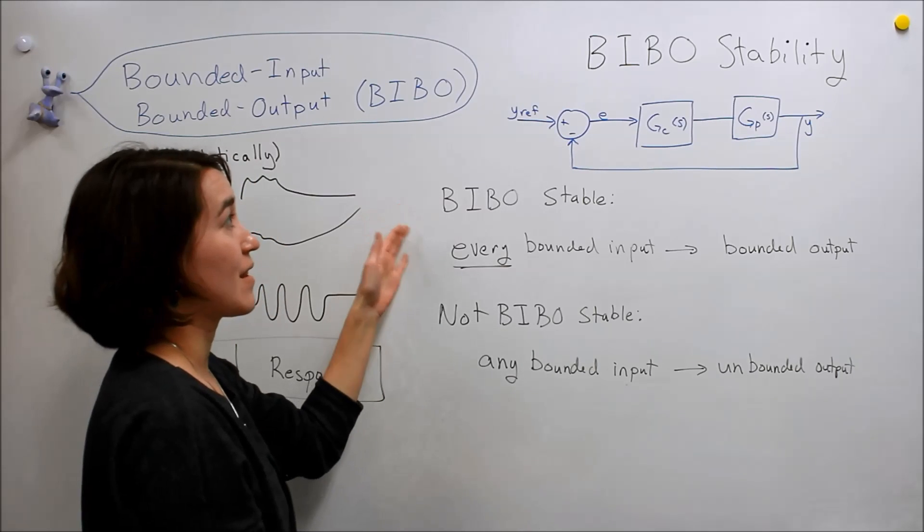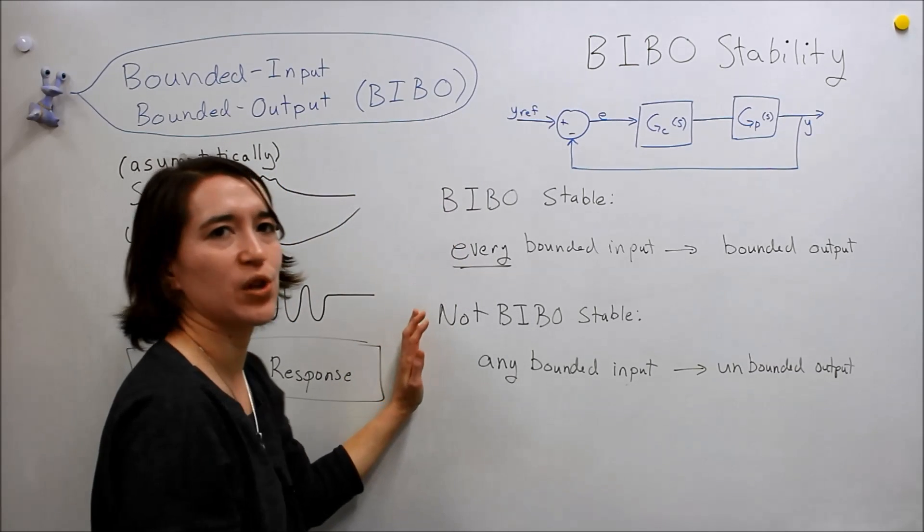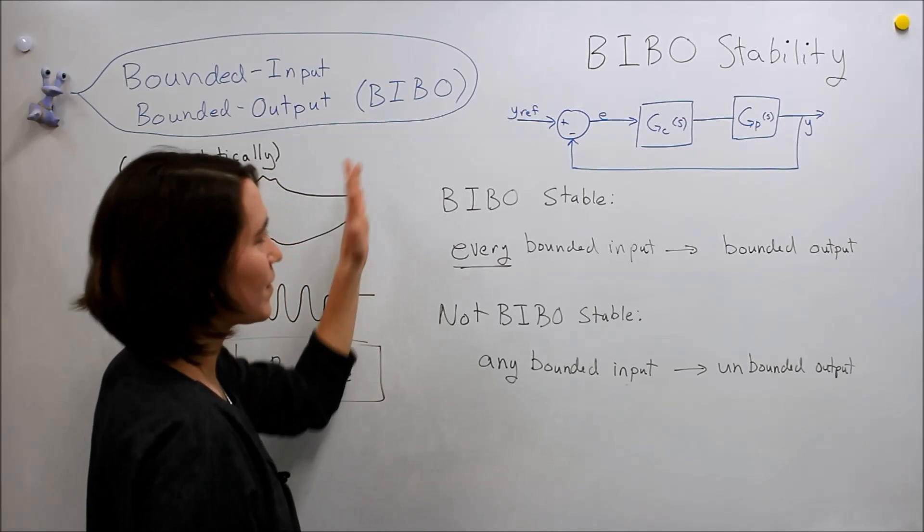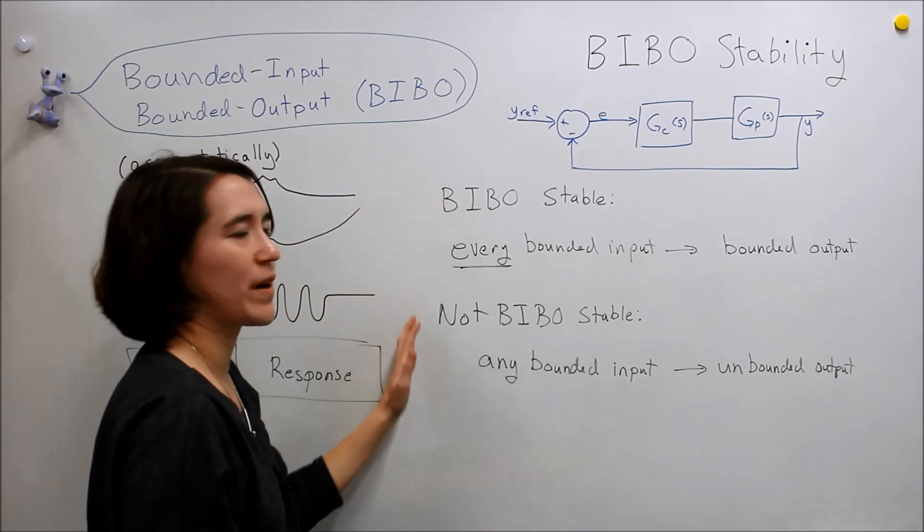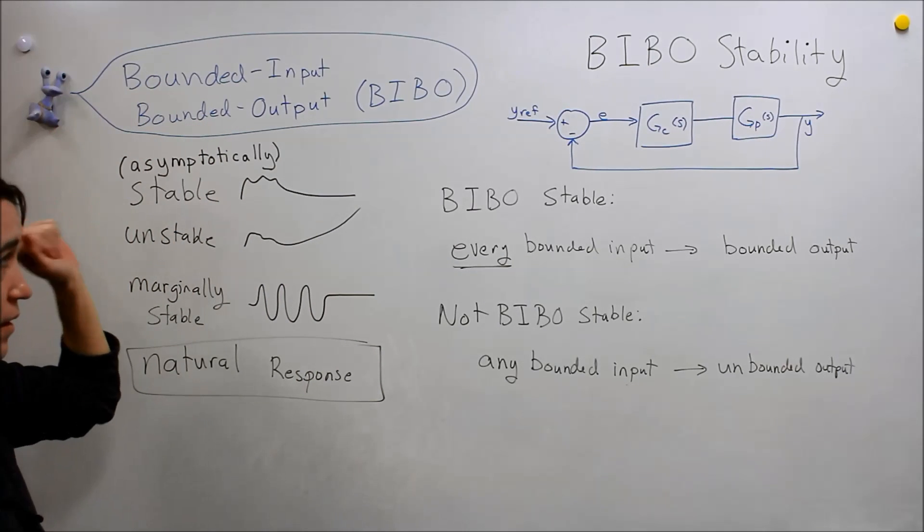And we're going to use the systems when we apply it to our closed loop transfer functions. And luckily, we're also just able to look at the poles, and if they're in the left half plane, we know they're stable. So we'll do a little bit more analysis on this, but this is the definition of bounded input, bounded output, stability.